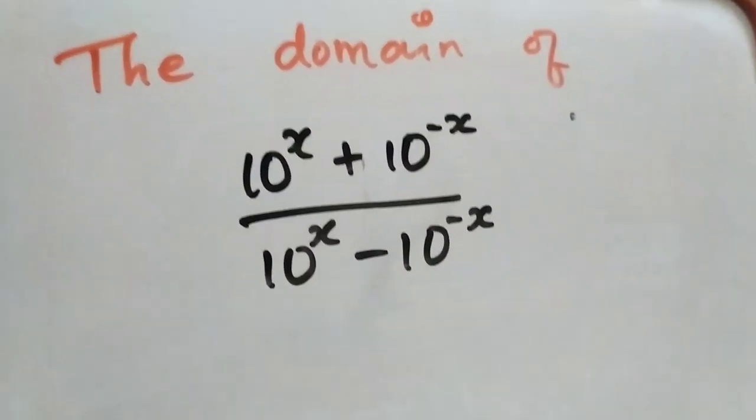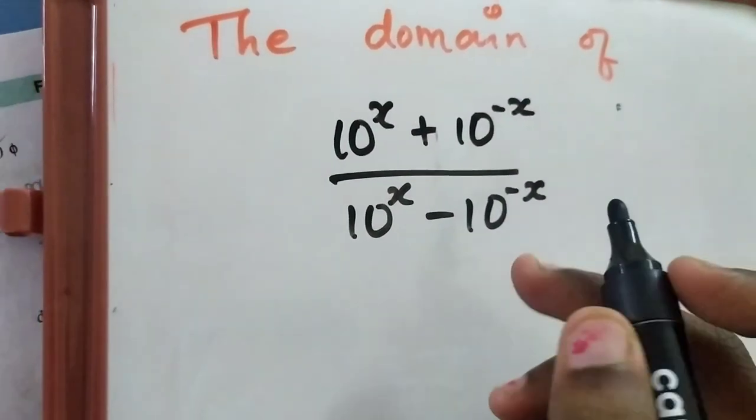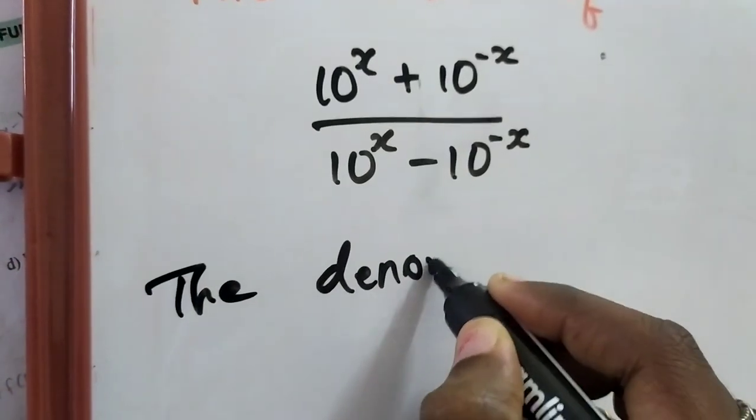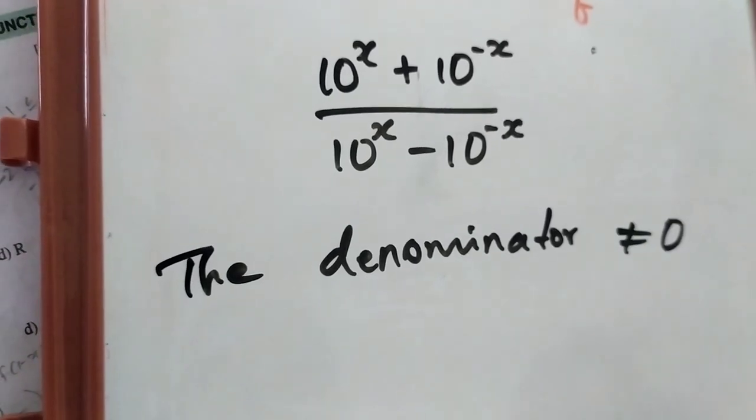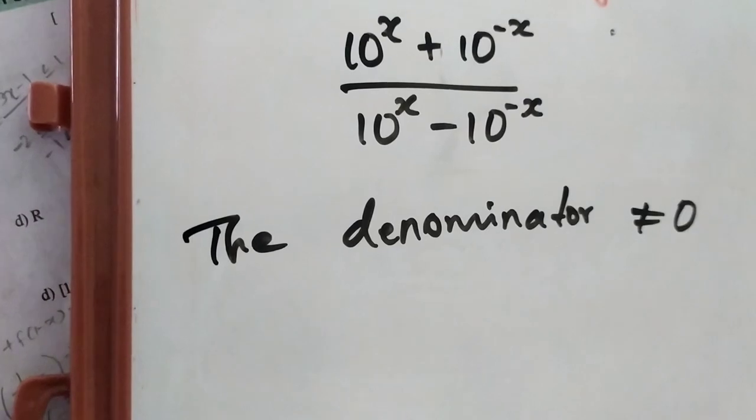To find the domain, for a rational type of function, the denominator should not be equal to 0. Suppose if it is 0, it will become infinity.